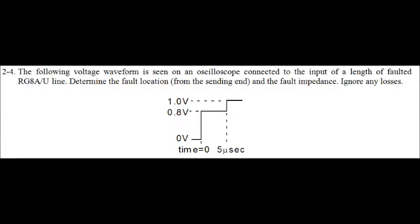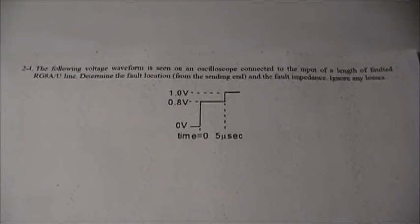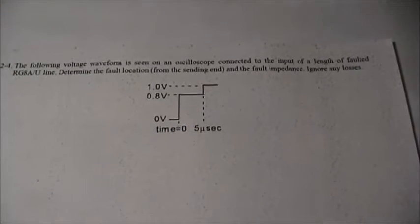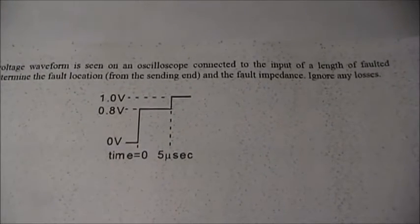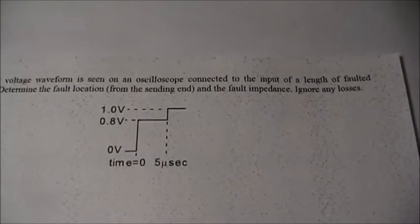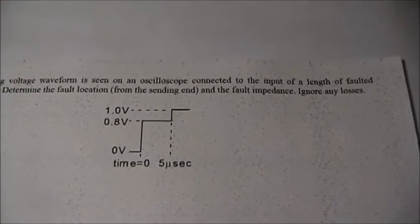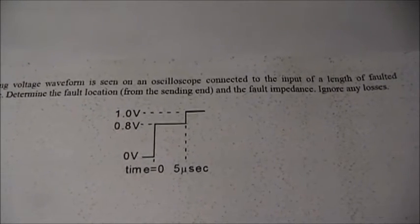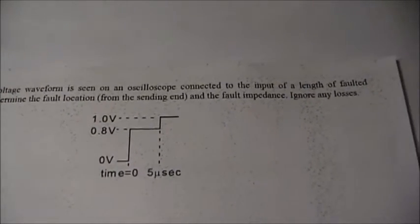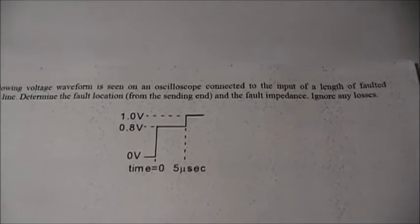So let's take a look at problem 2-4 in cinema. Here's the problem statement. The following voltage waveform is seen on an oscilloscope connected to the input of a length of faulted RG8A/U line. Determine the fault location from the sending end and the fault impedance. Ignore any losses.